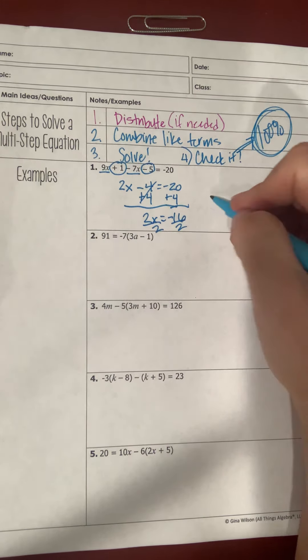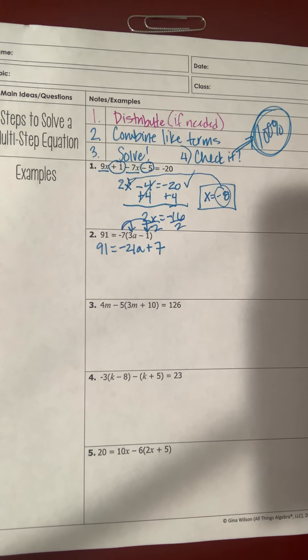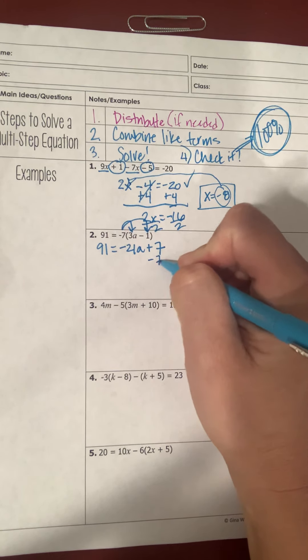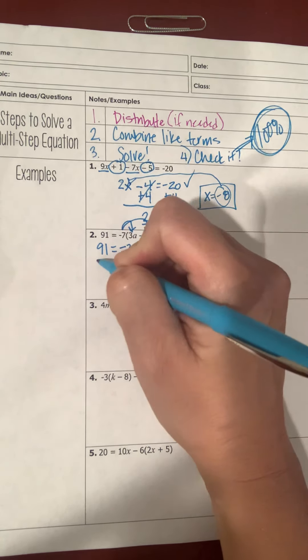For number two, I have to distribute first. I keep 91 on the left-hand side and distribute the negative 7: negative 7 times 3a is negative 21a, and negative 7 times negative 1 is positive 7. Since I like my variable on the left, I subtract 7 from both sides and get 84 equals negative 21a.